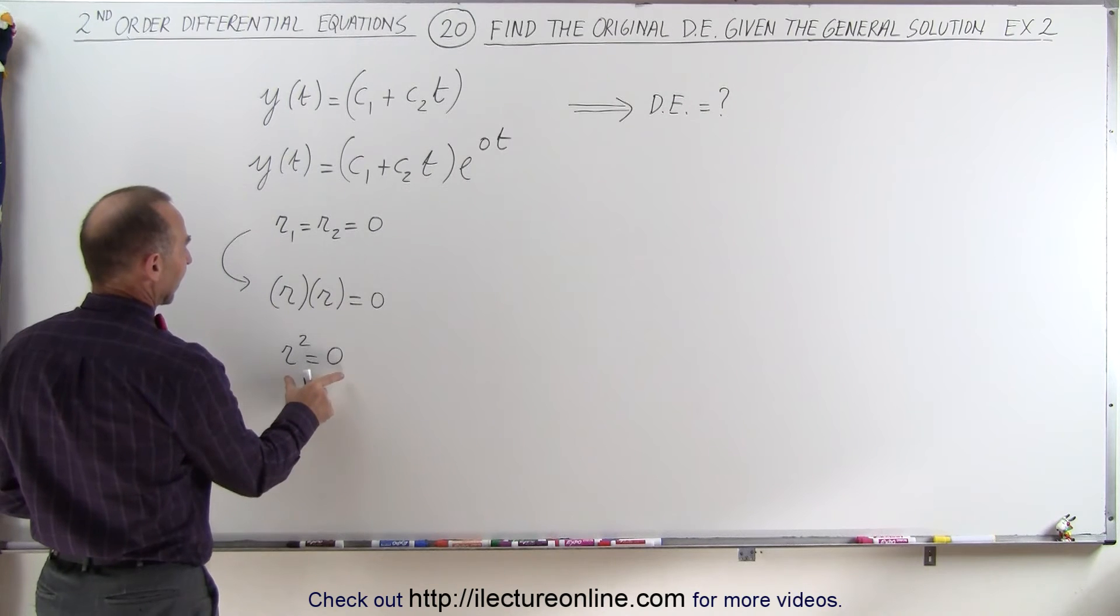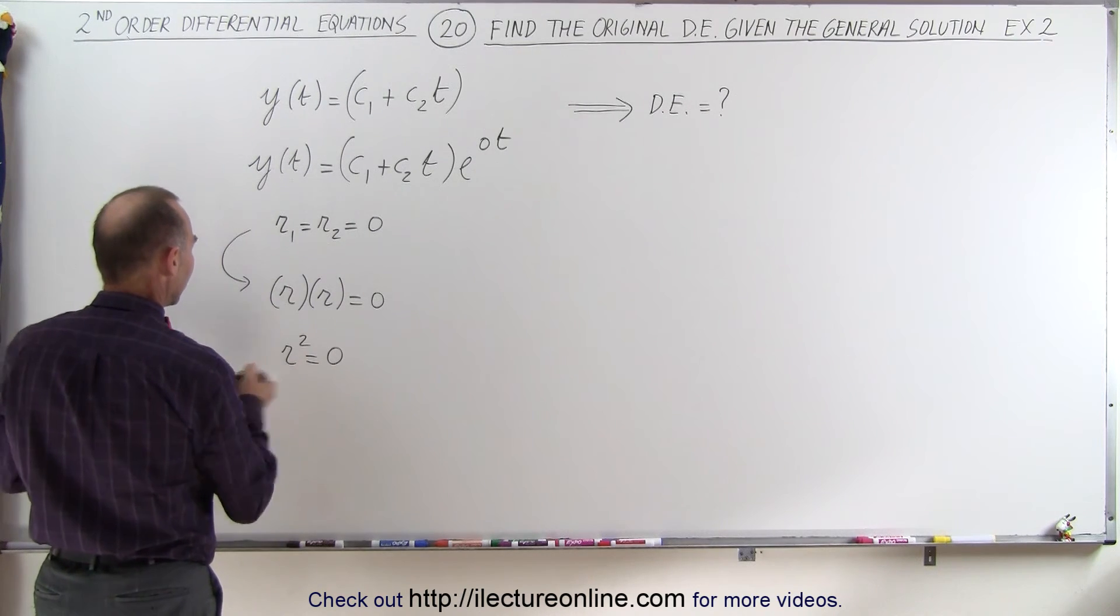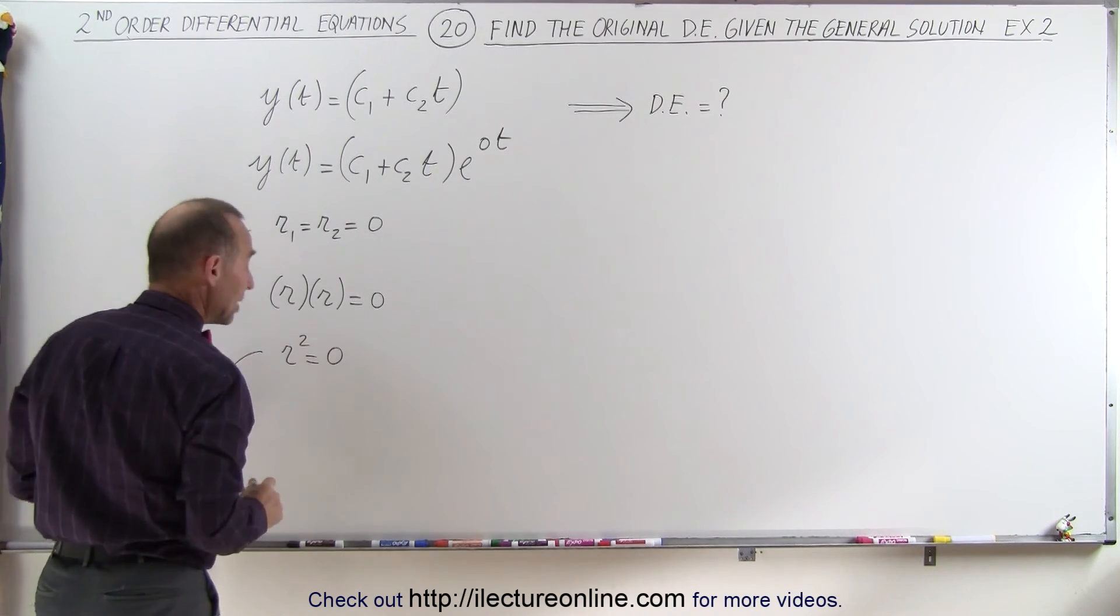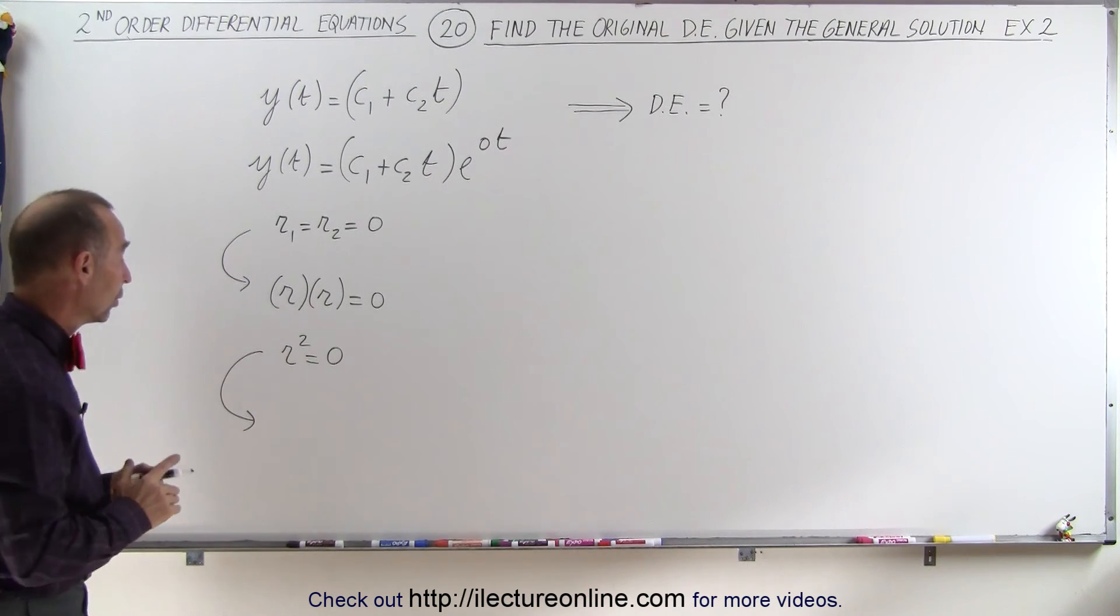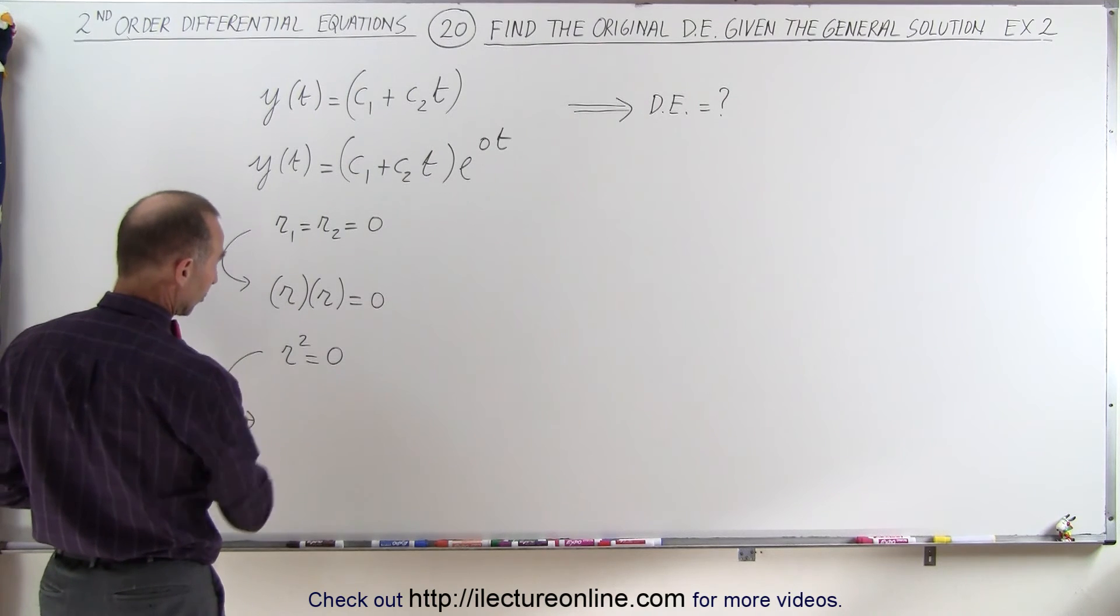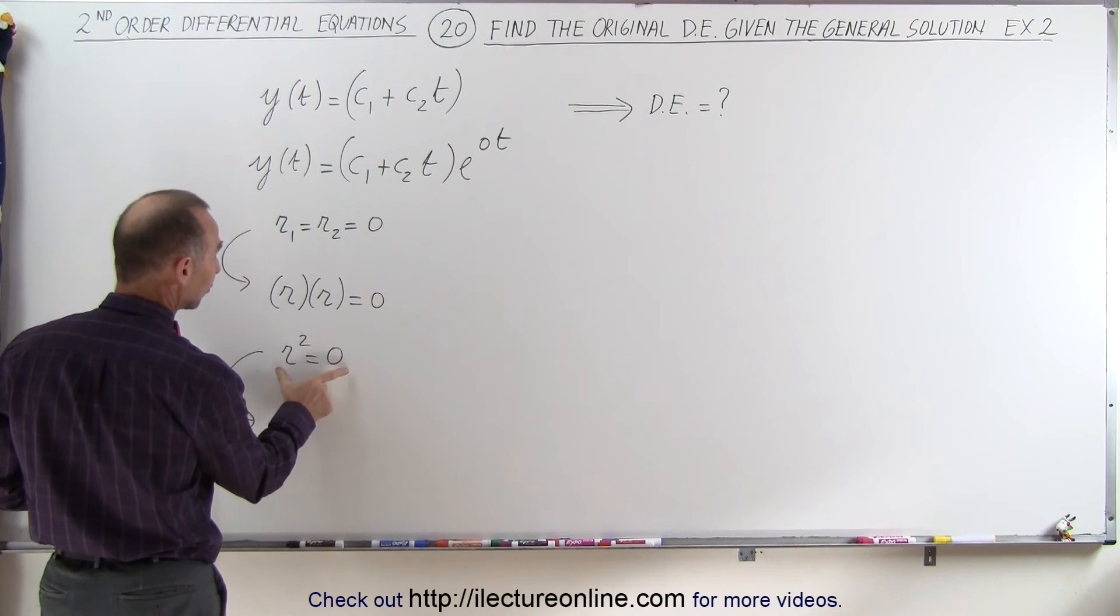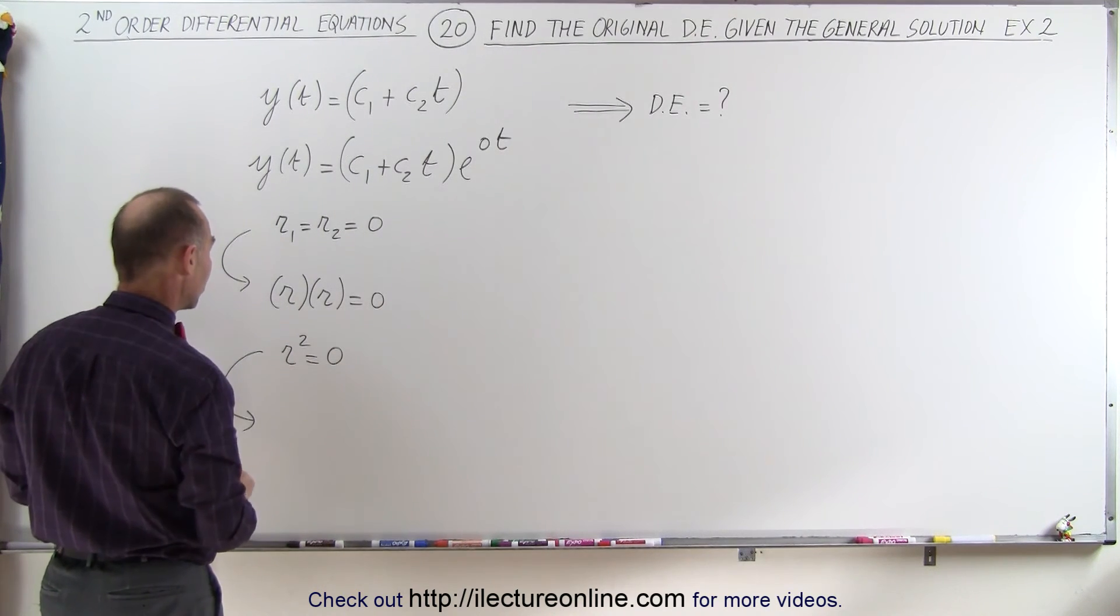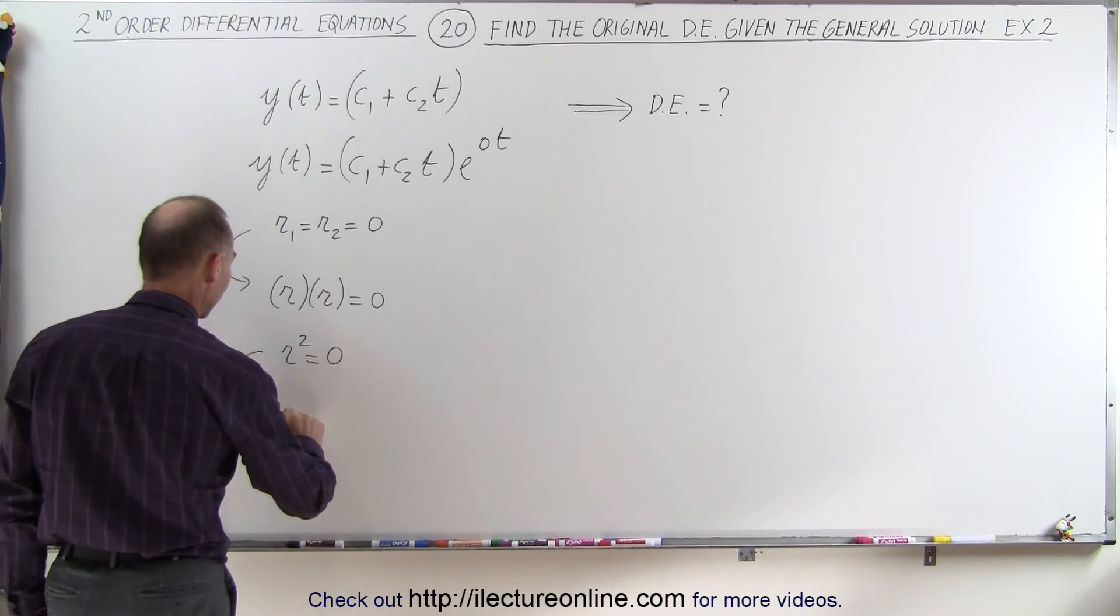So since this is our characteristic equation, this then lends itself to finding the original differential equation. Notice the y prime term is not going to be there, and the y term is not going to be there, because we don't have that as part of our characteristic equation.